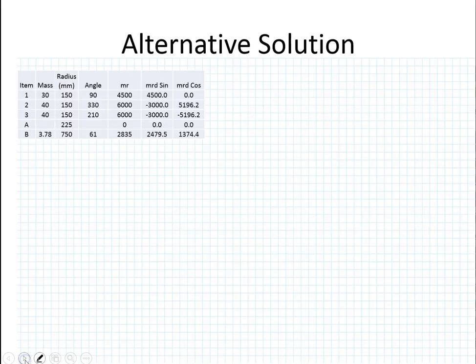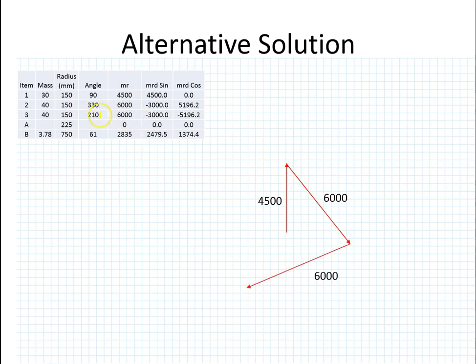An alternative version would be: I now have my masses, my angles, radii, and the vectors. So that by that is 4500. If I draw them, there's 4500 at angle 90, then 6000 at angle 330, then 6000 at angle 210, and then B, which was 2835 at angle 61. So that's my solution. If I measured that, it'd be 1687, and if I measure the angle, it will be 215.